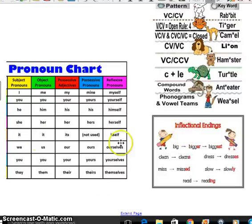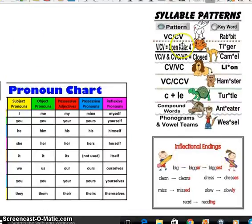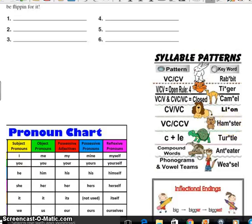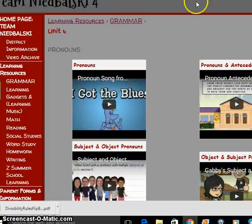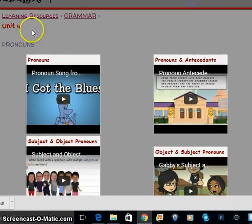And once again, antecedents and pronouns and inflectional endings. That's looking at ed and ing. So I don't think that'll be too tough this week. And then just for a reminder, we give you some pronoun chart, inflectional endings, and looking at how to look at syllable patterns. And where do we break up those words?